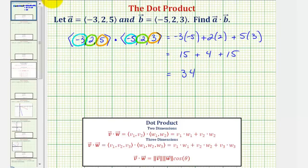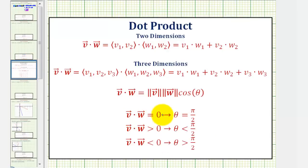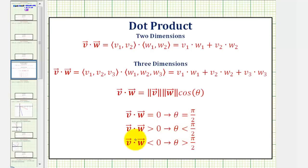Our dot product equals thirty-four. The value of the dot product tells us something about the angle theta between the two vectors. If the dot product is equal to zero, the two vectors are orthogonal or perpendicular, meaning angle theta equals pi over two radians. If the dot product is greater than zero, which is our case, then angle theta is less than pi over two radians. If the dot product is negative, then angle theta is greater than pi over two radians.